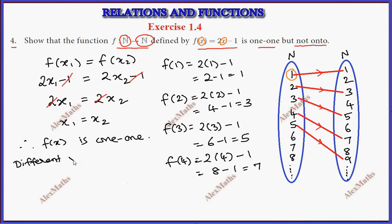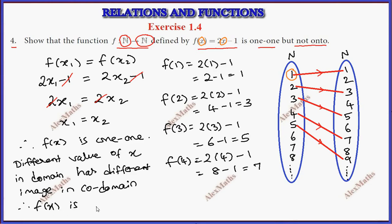Different values of x in the domain have different images in the codomain. That's why f(x) is one-to-one.